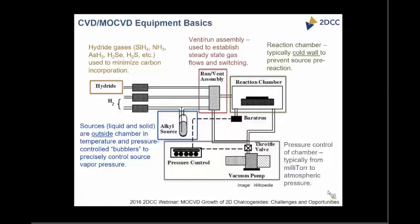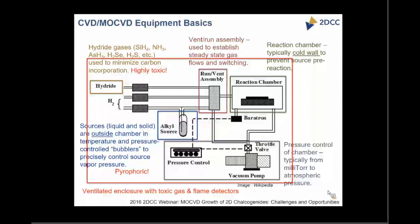One thing I want to stress is the kind of gases we work with — hydrogen sulfide and hydrogen selenide are highly toxic, and most metal organic precursors are pyrophoric. It is extremely important to handle all of these precursors in the safest way possible. Safety data sheets are our friend. Most of these CVD systems are enclosed in a ventilated enclosure equipped with toxic gas and flame detectors. Whatever gases come out as a result of the reaction are fed into a scrubber, which scrubs out all hazardous gases and gives a benign output.